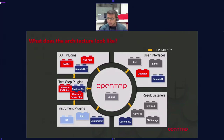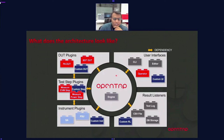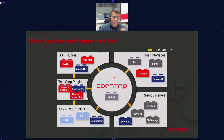Now let's look at the architecture. The OpenTap engine sits at the center, and the rest of the components are plugins — plug and play. OpenTap can exist by itself, but when you need a Device Under Test, you can create a new one and plug it into OpenTap by extending the base class.